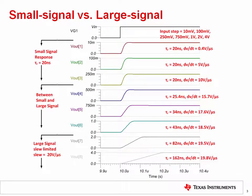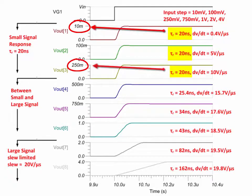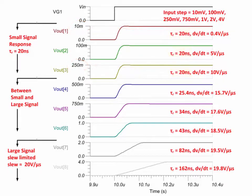This figure illustrates the output of the non-inverting buffer circuit versus different input step sizes. Notice that the output rise time is a constant 20 nanoseconds for input steps of 10 millivolts to 250 millivolts. Because the rise time is constant, we know that the response is small signal. The device in this example, the OPA192, has a slew rate of 20 volts per microsecond.